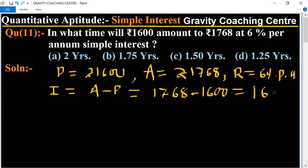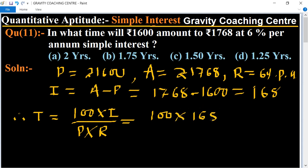168, which is the interest. Therefore, required time equals 100 multiply interest upon principal into rate of interest, equals 100 into 168 upon principal 1600 and rate of interest 6%.